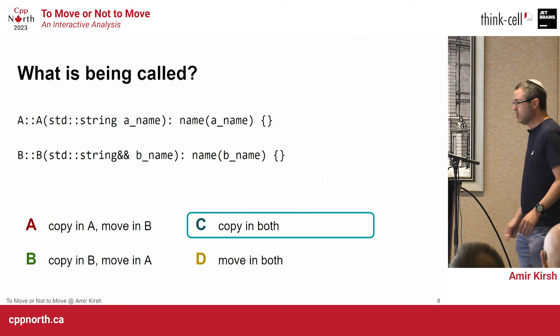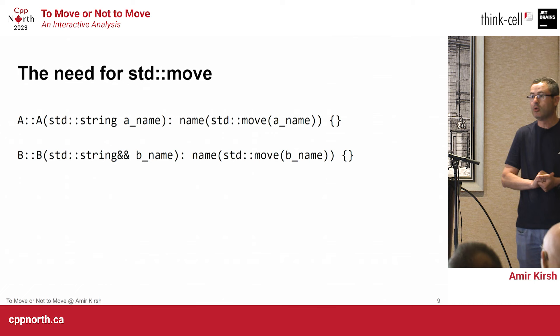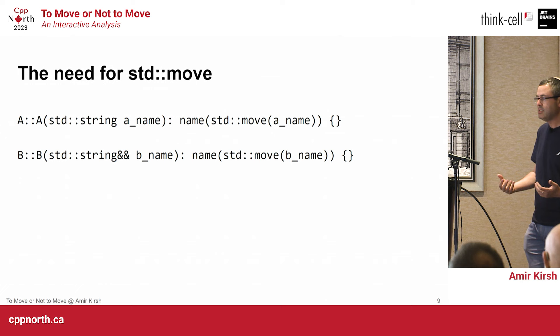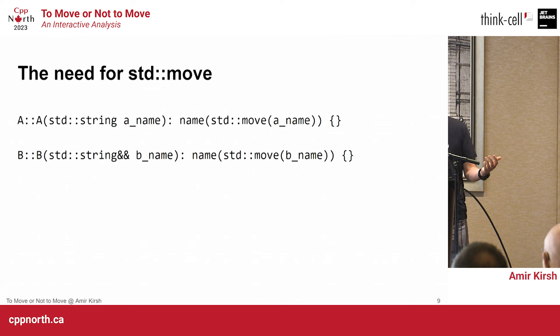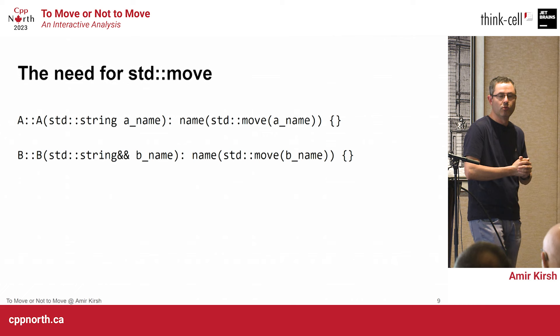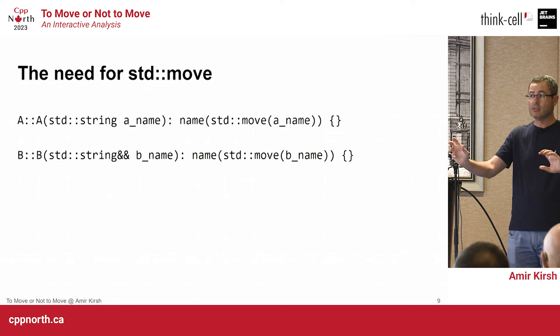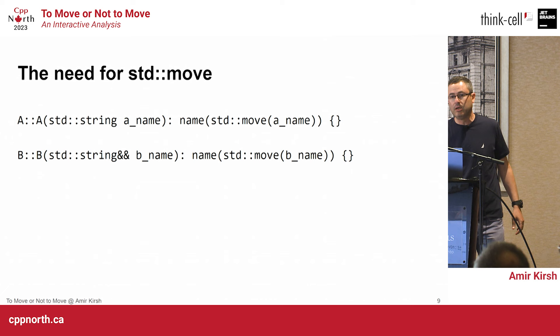This is the reason for std::move. The correct way is — in both cases — I know I have something I'm not going to use anymore. In case A, I got it by value; in case B, it's an rvalue. So in both cases I can move it. What does std::move do? It's a cast — a cast to rvalue. It preserves const and volatile. If the variable was const, it preserves its constness.